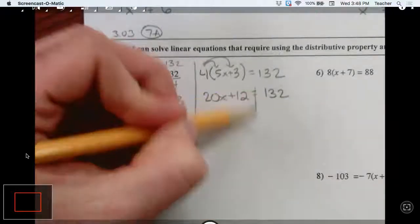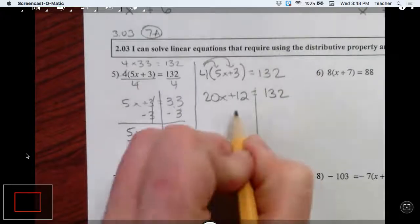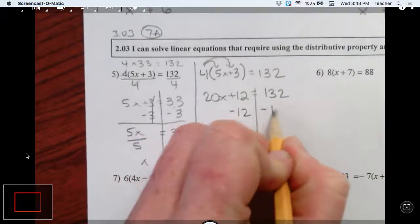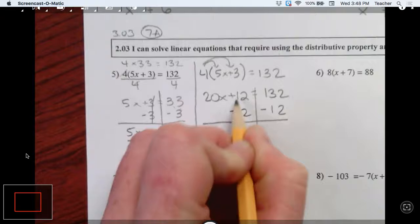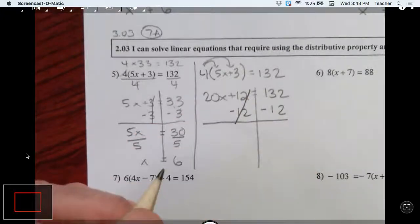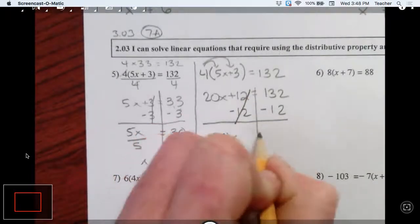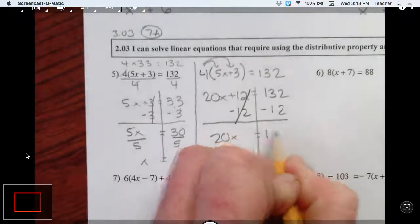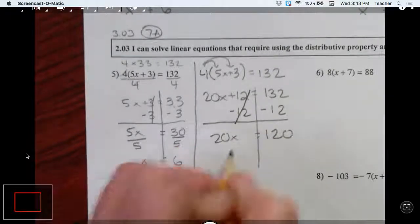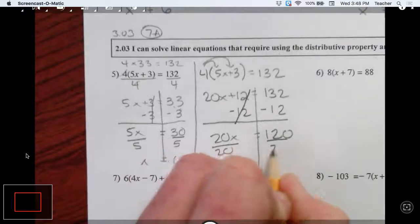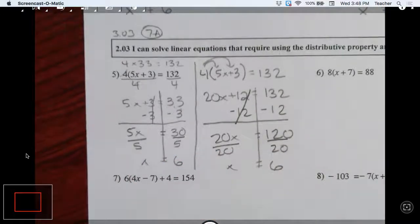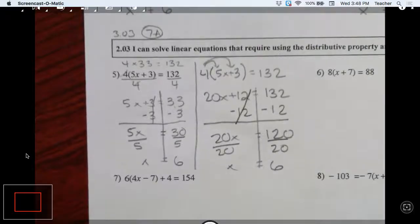Over here I have 132. Now we just go ahead and solve this like any two-step equation. 12 minus 12, zero pair. 20x is equal to 120. Divide by 20 and I get 6. Same exact answer, I just solved it differently.